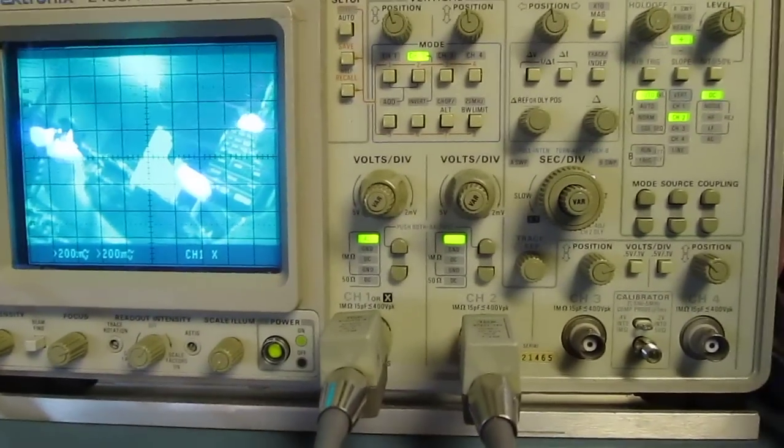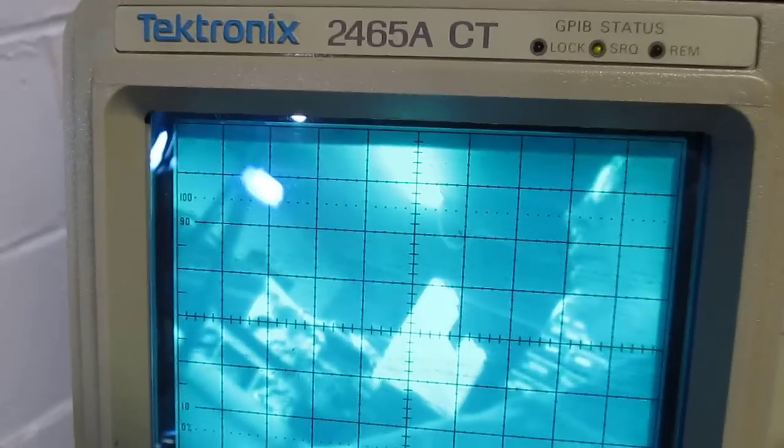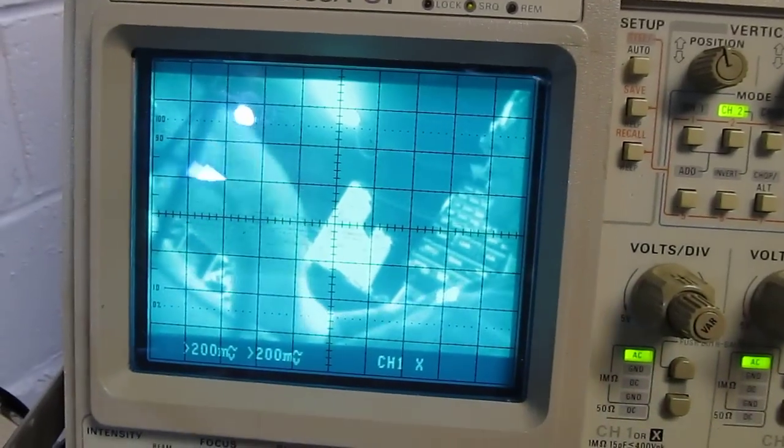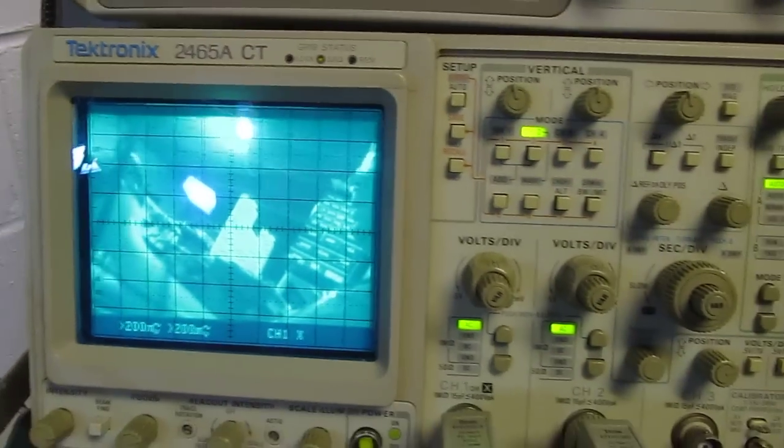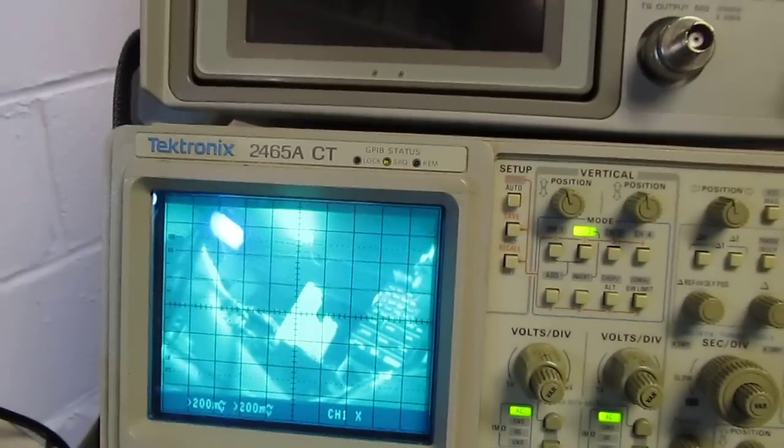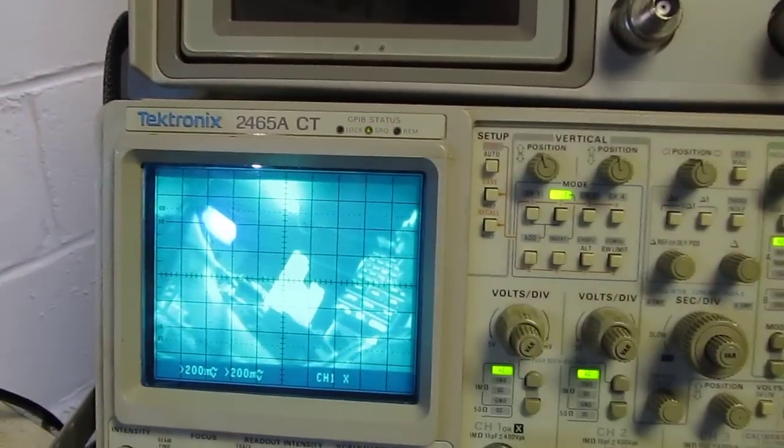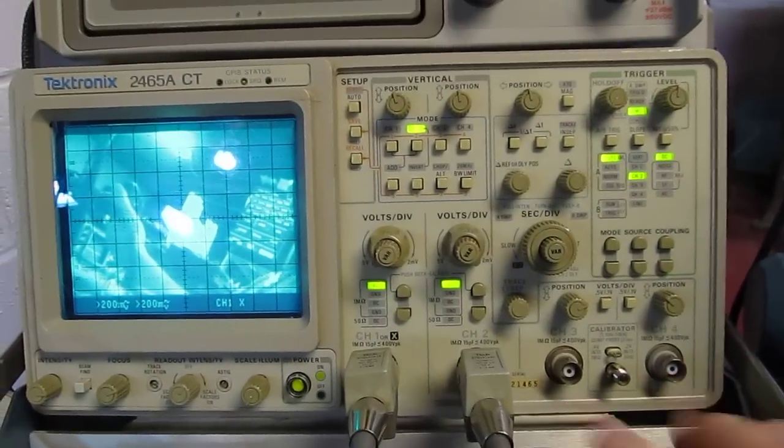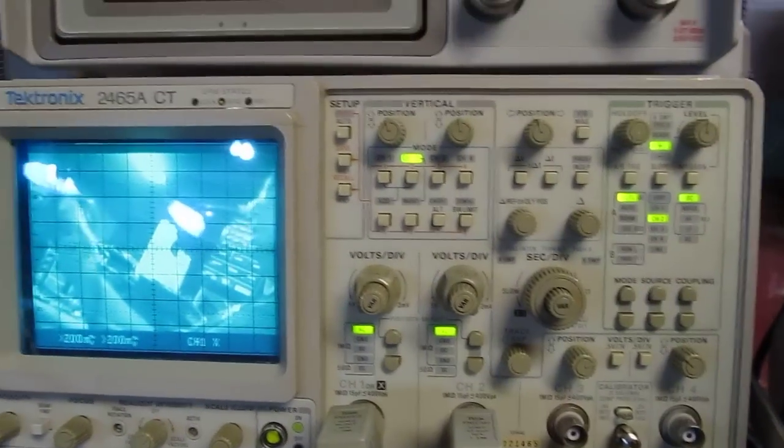This scope here, another workhorse in my lab. This is the Tektronix 2465 ACT and actually on the scope is an actual video of me doing this video using my little scope converter circuit. The 2465 came out in about 1985-86 or so. The A came out in 87 or 88. 350 megahertz four channels. Great little scope, dual time base, all that kind of good stuff.